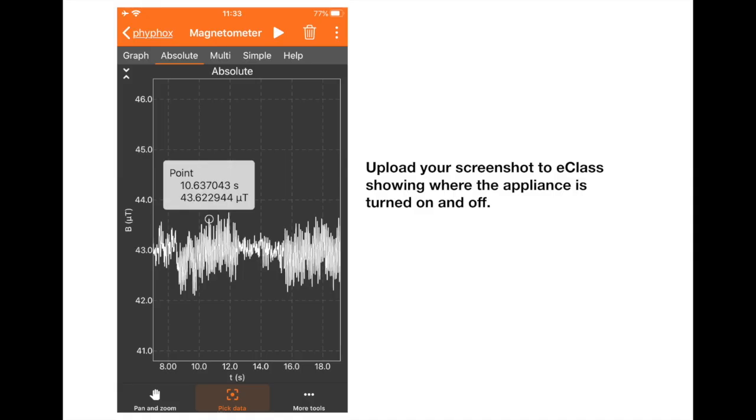Now that we've collected data, we want to go ahead and take a screenshot of the data, either by using the save menu in the upper right-hand corner of the Phyphox app, or using your phone's screenshot capabilities. Go ahead and upload that screenshot to eClass showing where the appliance is turned on and off.